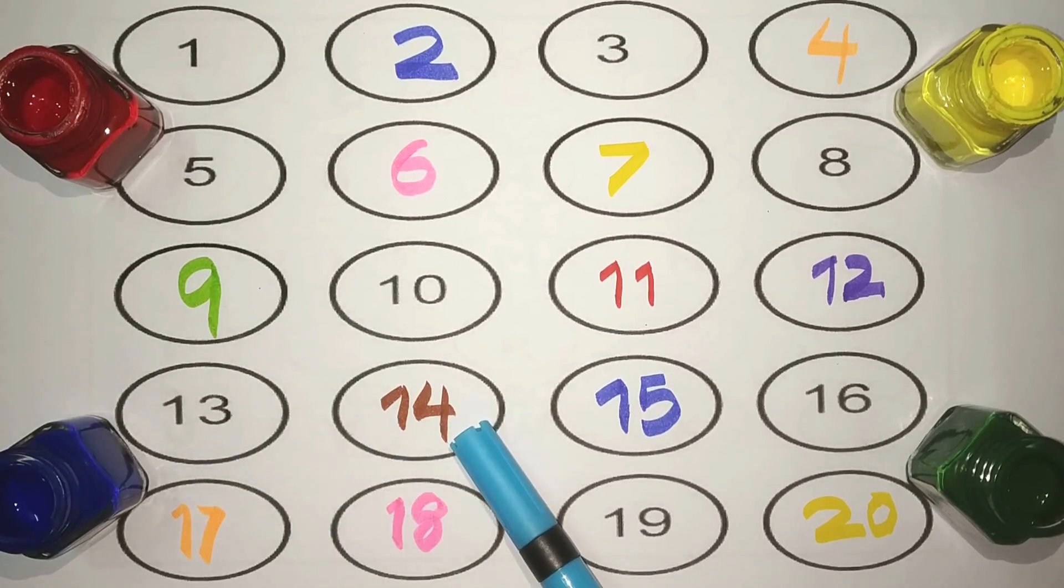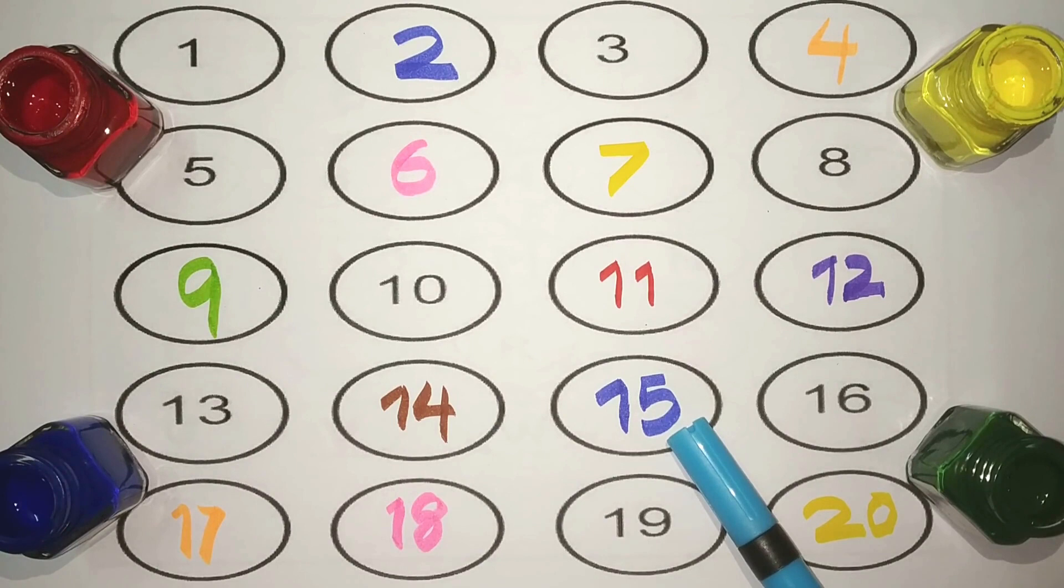One, four, fourteen. Brown. One, five, fifteen. Blue. One, six, sixteen. Black.